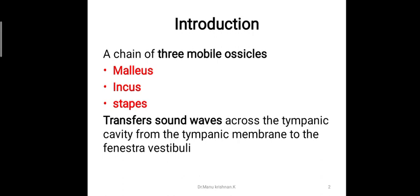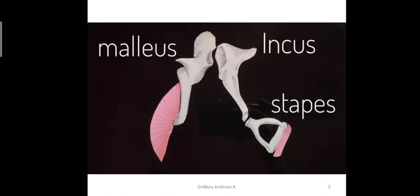The ear ossicles are a chain of three mobile ossicles — namely the malleus, incus, and stapes — which transfer the sound waves across the tympanic cavity from the tympanic membrane to the fenestra vestibuli, or the oval window. The three bones located in the middle ear cavity act as a bridge connecting the tympanic membrane and the oval window, and they function in both the transfer and the amplification of sound waves.